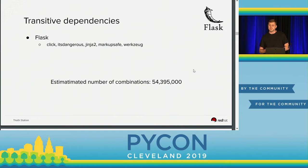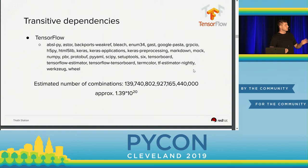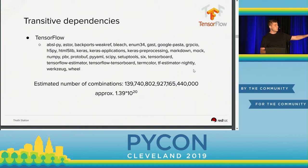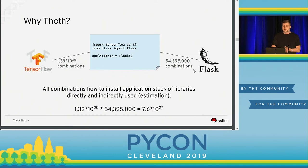If you take a look at TensorFlow, things might get even worse. TensorFlow is a bigger project — it depends on many more libraries, and these libraries have more versions. When I estimated how many combinations there are for different TensorFlow releases with their dependencies, I found approximately 1.3 multiplied by 10 to the power of 20 combinations. I'll refer to this as a TensorFlow stack. Now if we take a look at how many combinations there are to install TensorFlow and Flask together, it's approximately 7.6 multiplied by 10 to the power of 27. That's really a huge number, and we haven't finished yet.